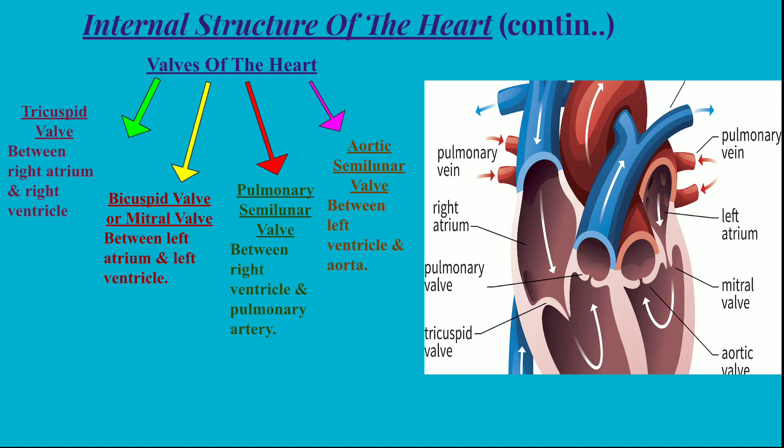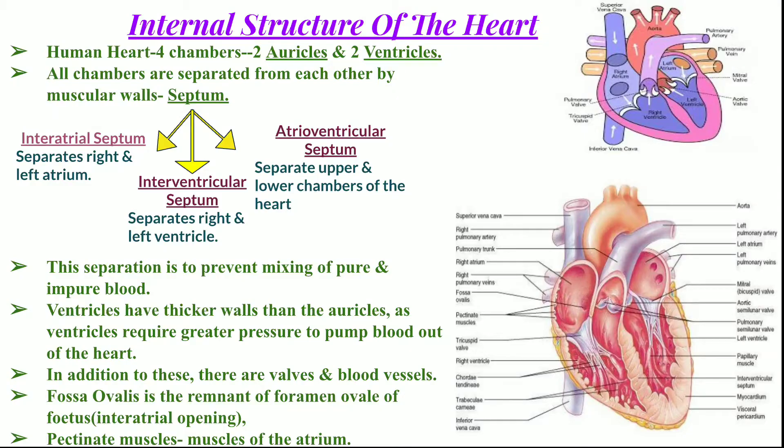The heart has four chambers. The heart of human beings has four chambers — two auricles and two ventricles. The two auricles are the two upper chambers and the two ventricles are the two lower chambers. These auricles are also called atria.